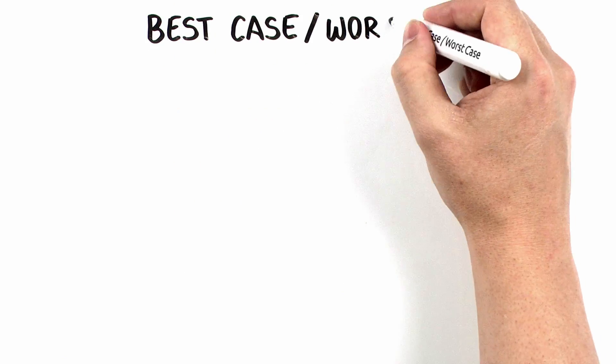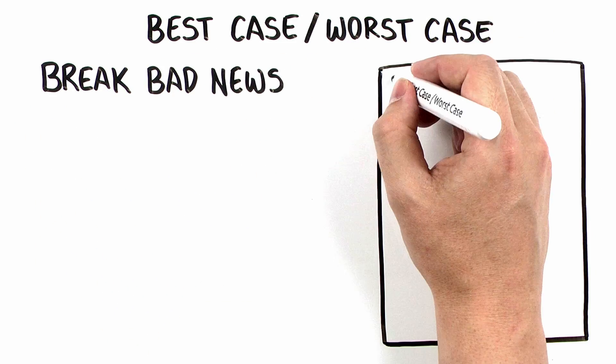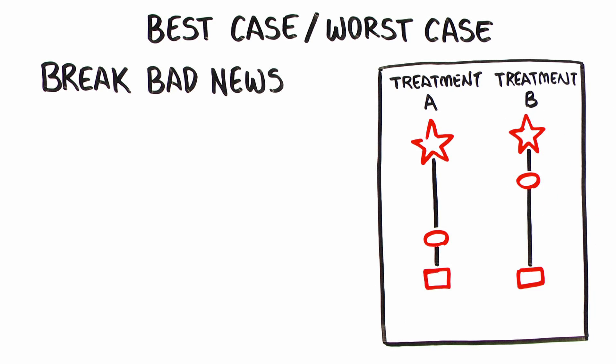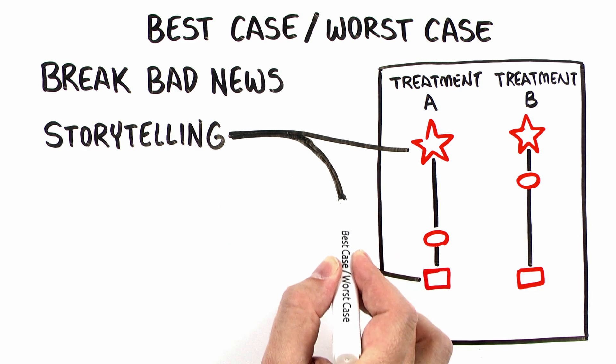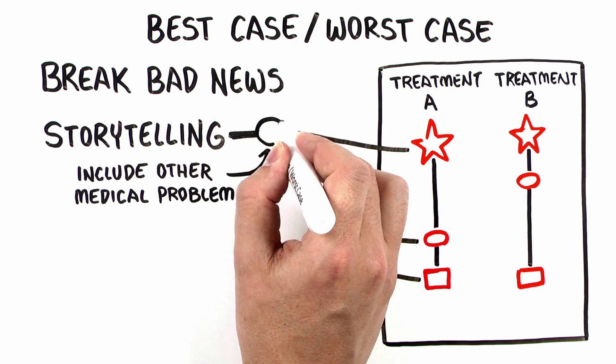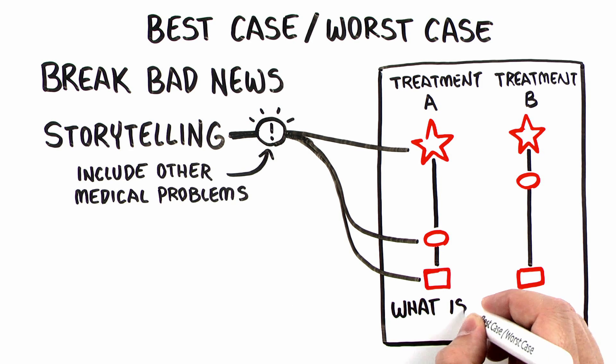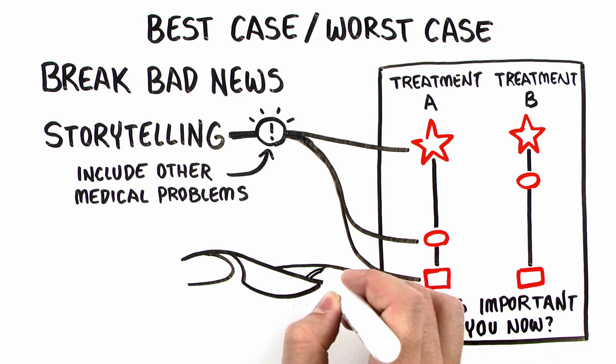Let's summarize. Best case, worst case has the following components. Break bad news. Identify two clear treatment options. Create a graphic aid that illustrates the range of outcomes and give it to your patient. You haven't done best case, worst case unless you complete this step. Use storytelling to describe the best, worst, and most likely outcomes. Avoid percentages and statistics. Include the patient's other medical problems in your story and how they will be affected by surgery and post-operative care. Describe how this will impact their overall survival and quality of life. Elicit preferences. Write, what is important to you now, on the graphic aid. And allow your patient adequate time to respond.